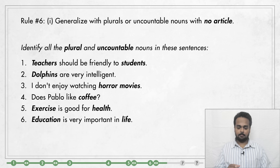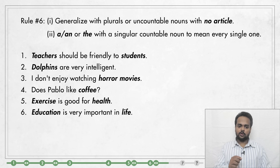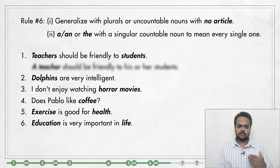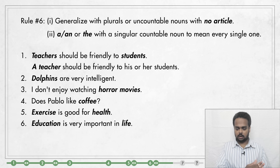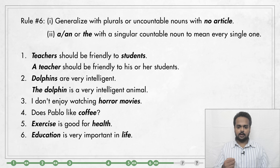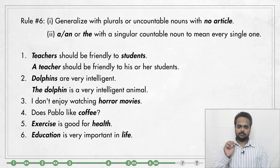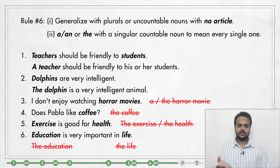Now this is the common way of generalizing, but there's one other way. With countable nouns, you can generalize by using A or AN with a singular countable noun to mean every single one — every single member of a group. For example: A teacher should be friendly to his or her students. It has roughly the same meaning as saying 'teachers,' but it's like saying every teacher. Here's one more example: The dolphin is a very intelligent animal — same meaning as saying 'dolphins,' but here we mean every dolphin. Remember that this form — generalizing with A, AN or THE — can only be used with singular countable nouns. So I cannot say 'I don't enjoy watching a horror movie'; only the plural form is possible there.